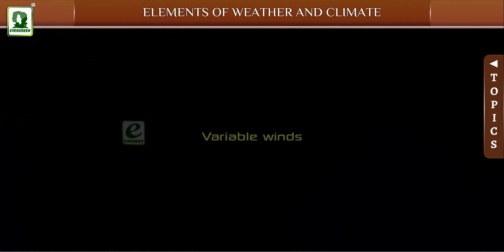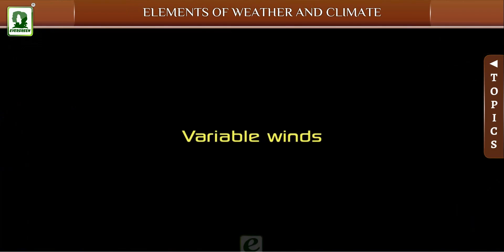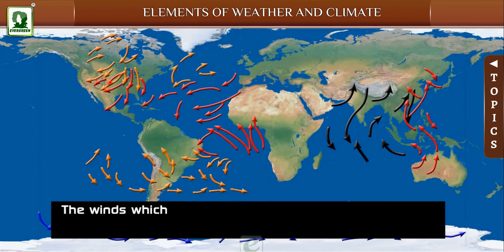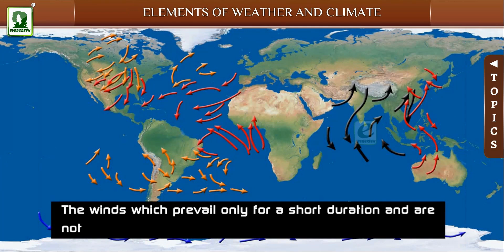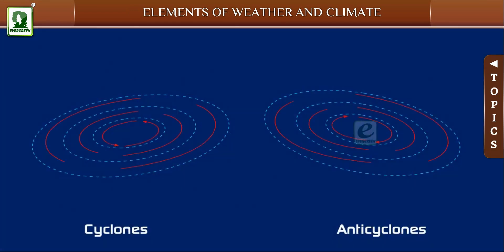The winds which prevail only for a short duration and are not regular are called variable winds. For example, cyclones and anti-cyclones.